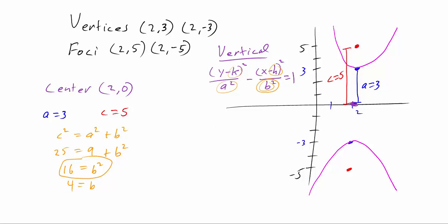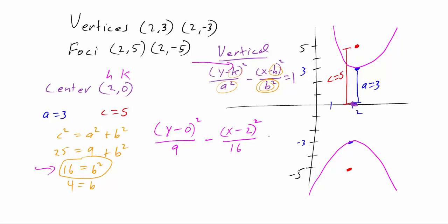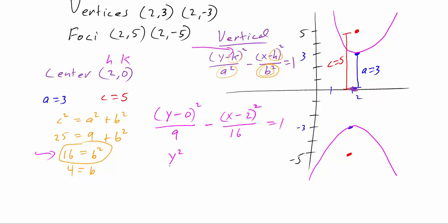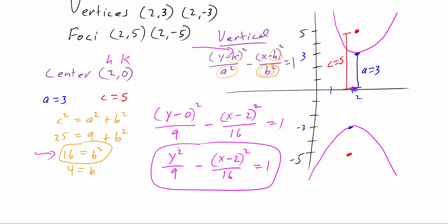We have all the information, so we plug in: (y − 0)² / 9 − (x − 2)² / 16 = 1, which simplifies to y² / 9 − (x − 2)² / 16 = 1. And this is our standard form. Once we have this, we can verify the graph based on the values for the vertices, foci, and center.